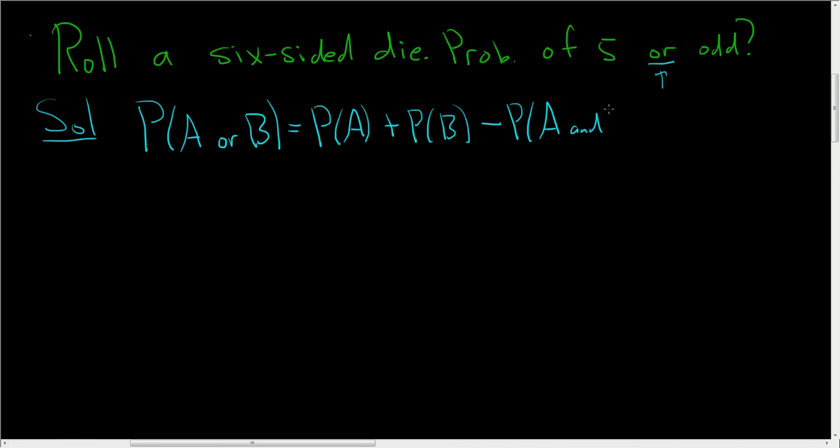Now you can use union instead of 'or', so you can certainly use union, and you can use intersection instead of 'and' if you like. Okay, so now in our problem, we have P of five or odd.